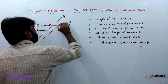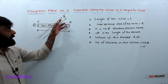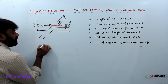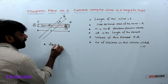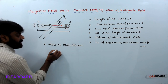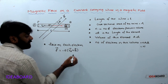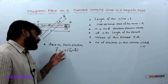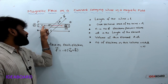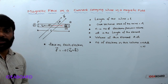Now apply the magnetic field. This current-carrying conductor makes a certain angle theta with the applied magnetic field. The force on each electron is f = −e into V_d cross B. We take the negative sign because the drift velocity of the electron is opposite to the current direction.